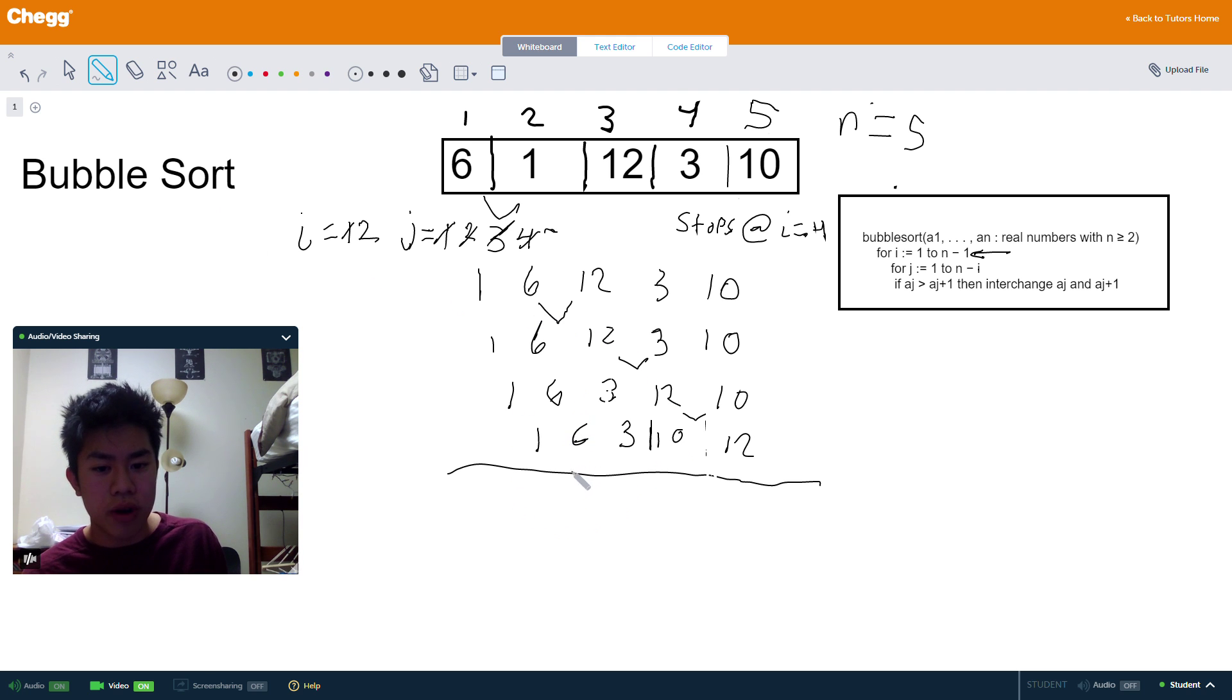So now we're going to run through the process again. It's going to check 1 and 6. It's going to see that nothing needs to be changed. And then it's going to check 6 and 3. It needs to swap. It swaps it. And then technically, technically the loop would keep on going. But nothing's going to change because everything is in the right order.